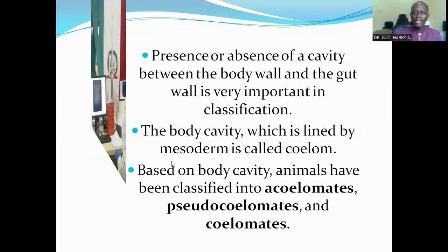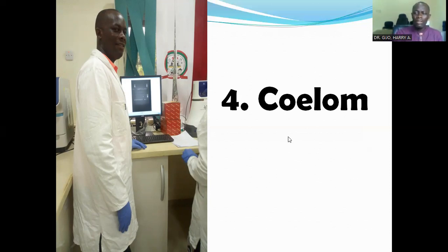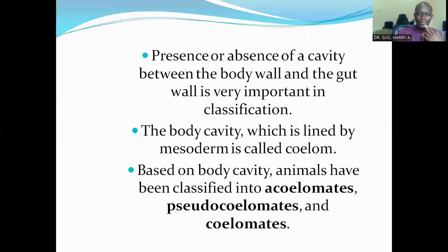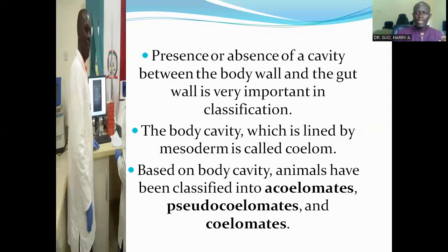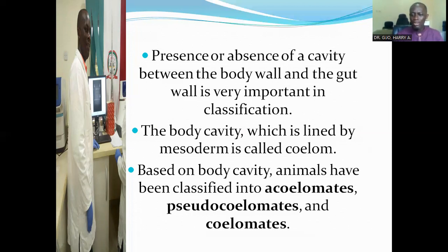Animals that have a coelom and those that do not have a coelom — this is very important in classification. Presence or absence of cavity between the body wall and the gut wall is very important in classification. The body cavity which is lined by mesoderm is called coelom. Based on body cavity, animals have been classified into three categories: the acoelomates that do not have body cavity, the pseudocoelomates that have a false body cavity, and the coelomates that have a true body cavity.